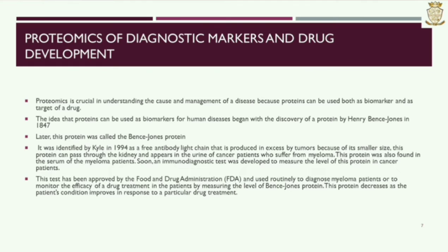The idea that proteins can be used as biomarkers for human diseases began with the discovery of a protein by Henry Bence Jones in 1847. Later, this protein was called Bence Jones protein. It was identified by Kyle in 1994 as a free antibody light chain that is produced in excess by tumors. Because of its smaller size, this protein can pass through the kidney and appears in the urine of cancer patients who suffer from myeloma. This protein was also found in the serum of myeloma patients.